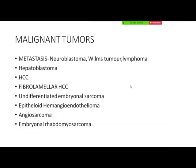Once you say cystic lesion, think of hamartomas. In the category of malignant tumors, the first and most common is always metastasis — from neuroblastoma, Wilms tumor, and lymphomas. Other primary hepatic neoplasms include hepatoblastoma, HCC, fibrolamellar HCC, undifferentiated embryonal sarcoma, epithelioid hemangioendothelioma, angiosarcoma, and rhabdomyosarcoma — the latter being rare ones.